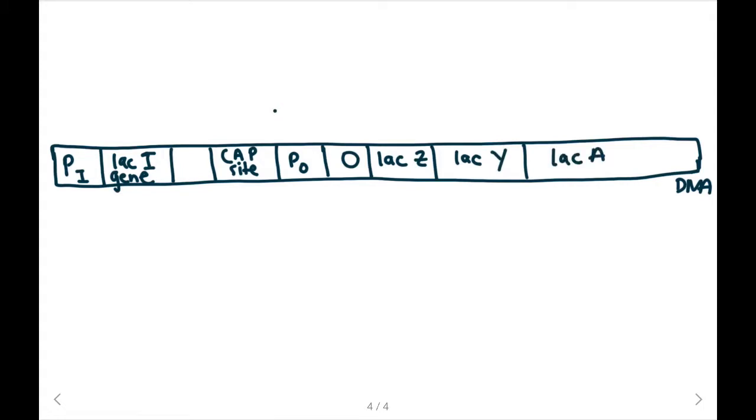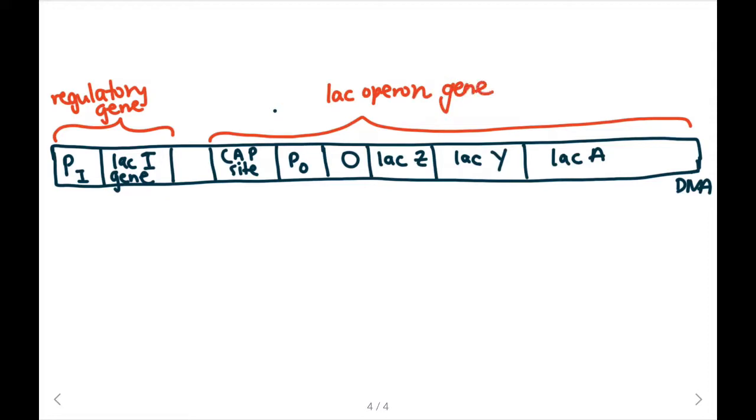And the lac operon actually consists of two genes. So we'll have our regulatory gene. And then we're going to have our actual lac operon gene. So the regulatory gene is essentially going to help us regulate when the lac operon gene will be turned on or off.